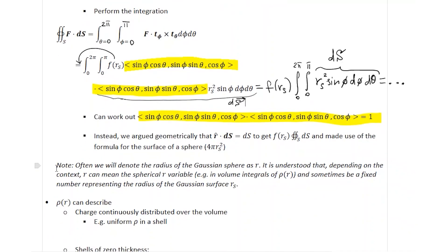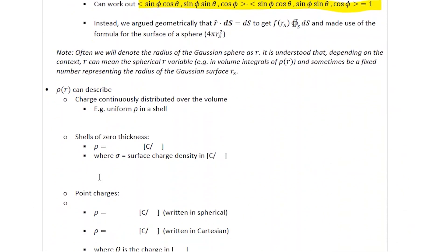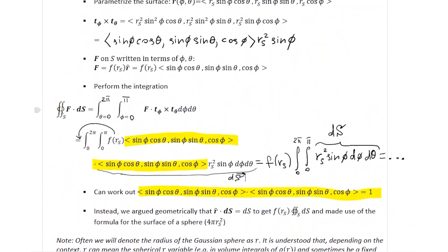One thing I want to mention is that we won't always be writing R_S. In the reading assignment you've already seen it written as just R. So depending on the context, R would mean either the spherical coordinate variable that can change — for volume integration of some charge density — or it could mean some fixed radius of some Gaussian surface.